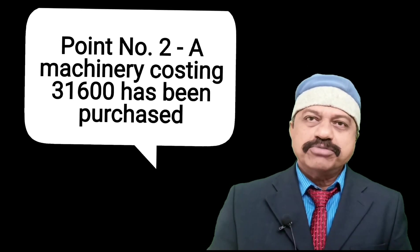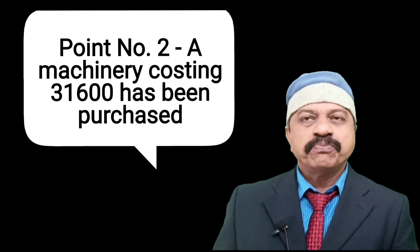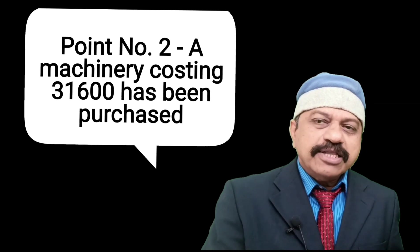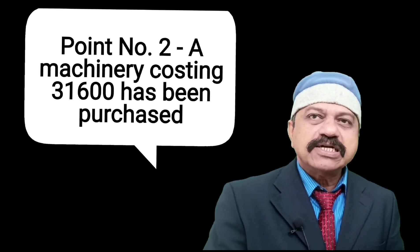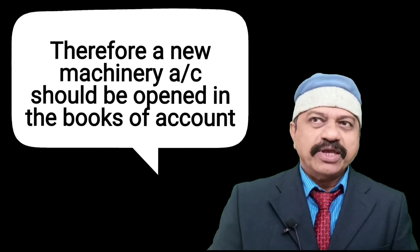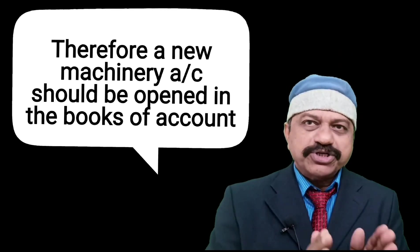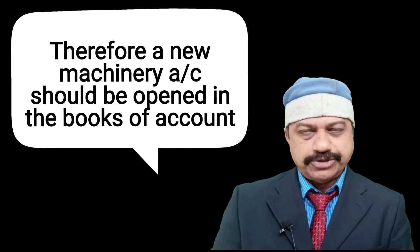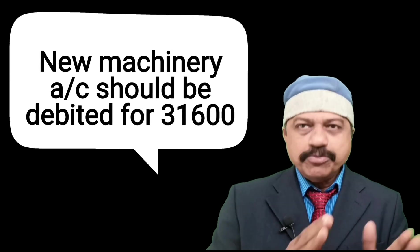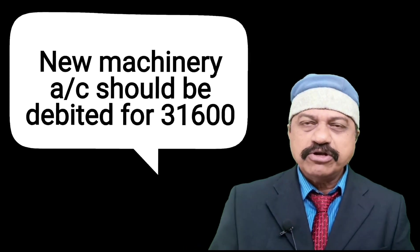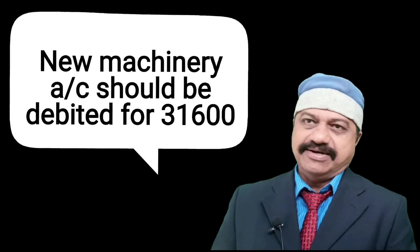Then point number three: a machinery costing 31,600 has been purchased. Therefore, a new machinery account should be opened in the books of accounts. New Machinery Account should be debited for 31,600.